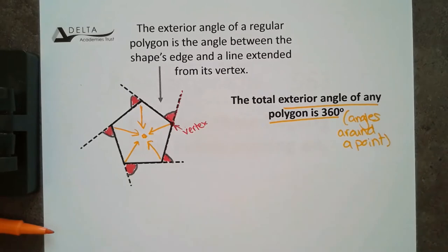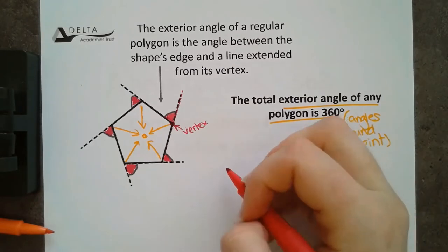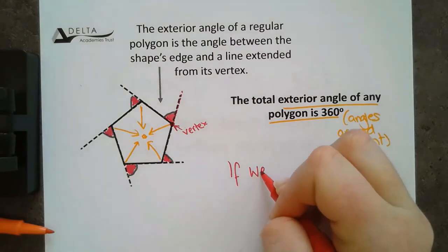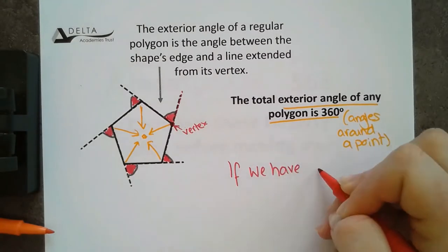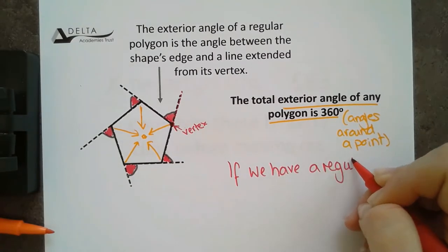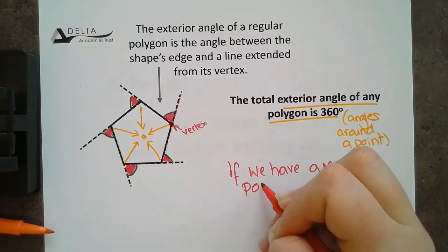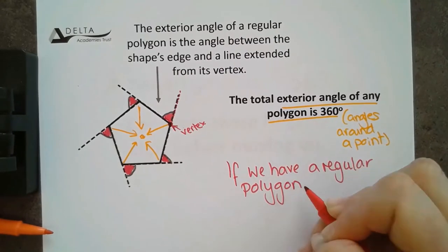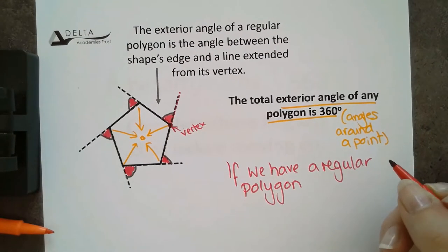So, what we then need to do is step this up a bit. If we have a regular polygon, we can then actually use the fact that we know that all of those sides and angles are the same, to equally split that 360.